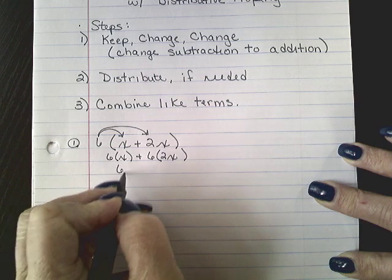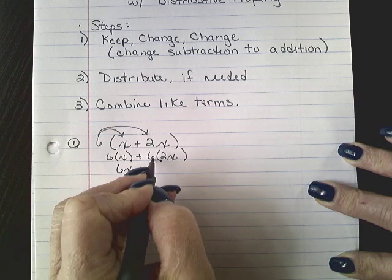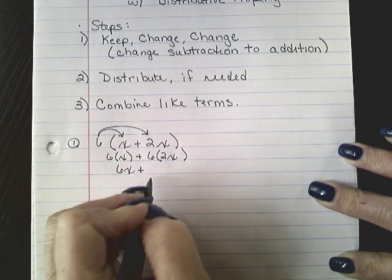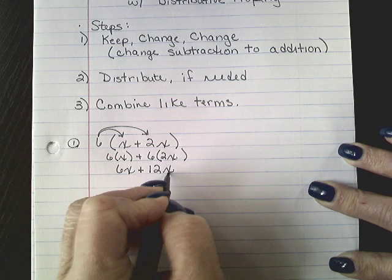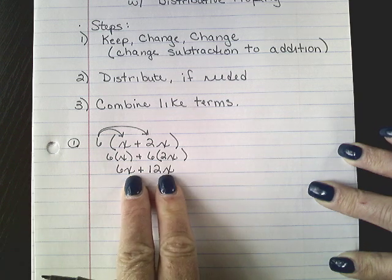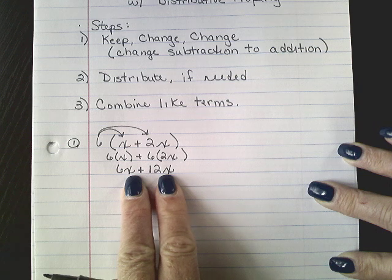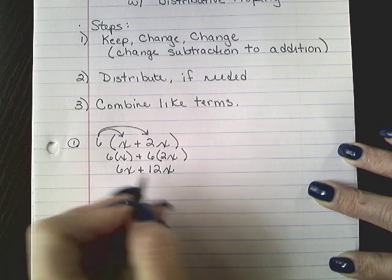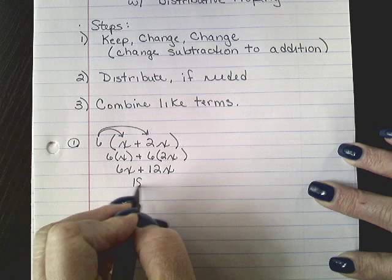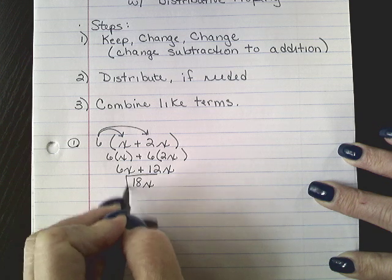Six times x would be 6x plus six times 2x would be 12x. Since they both share the same variable to the same power, we combine these two and our answer would be 18x.